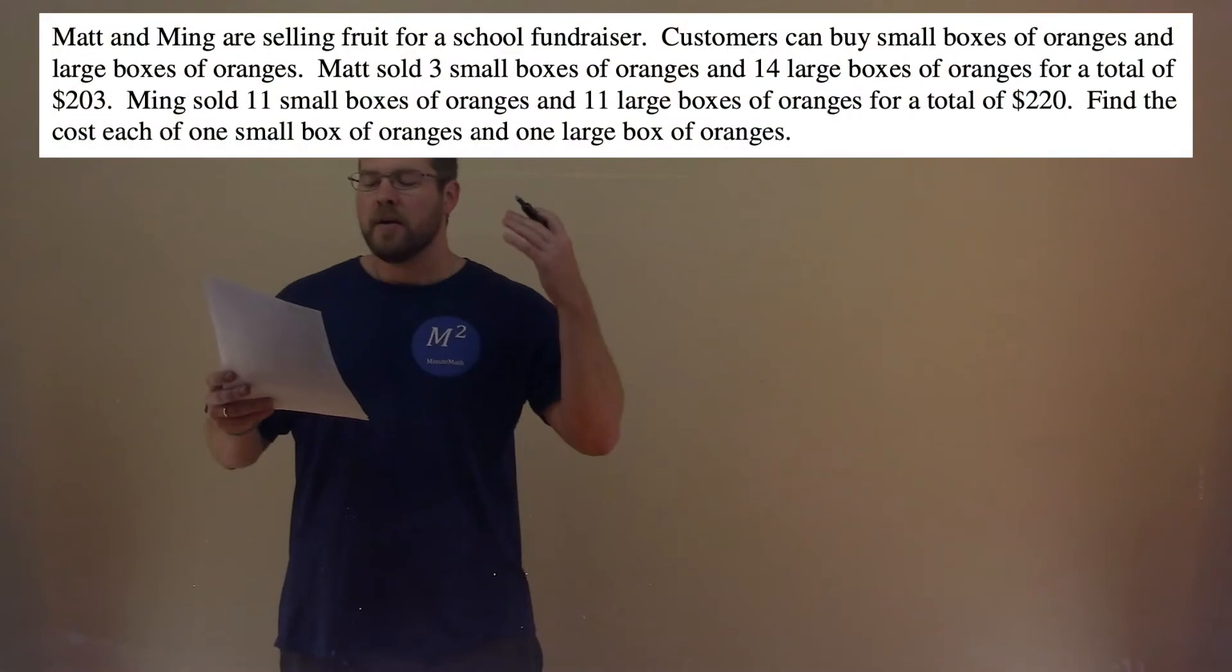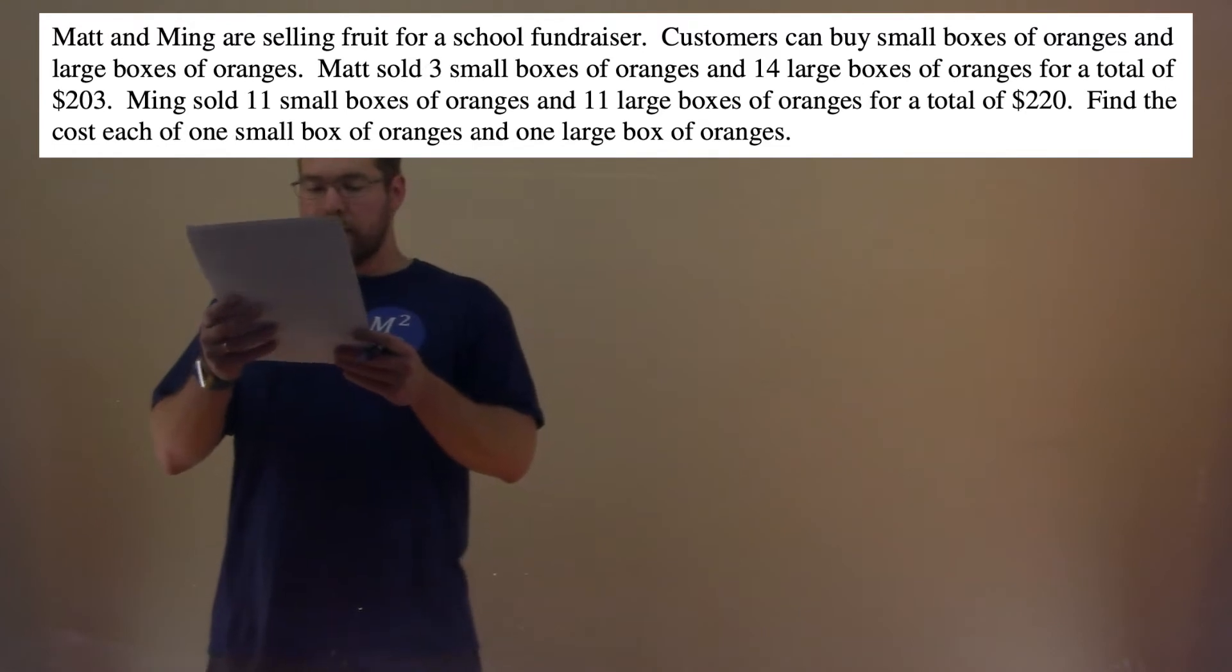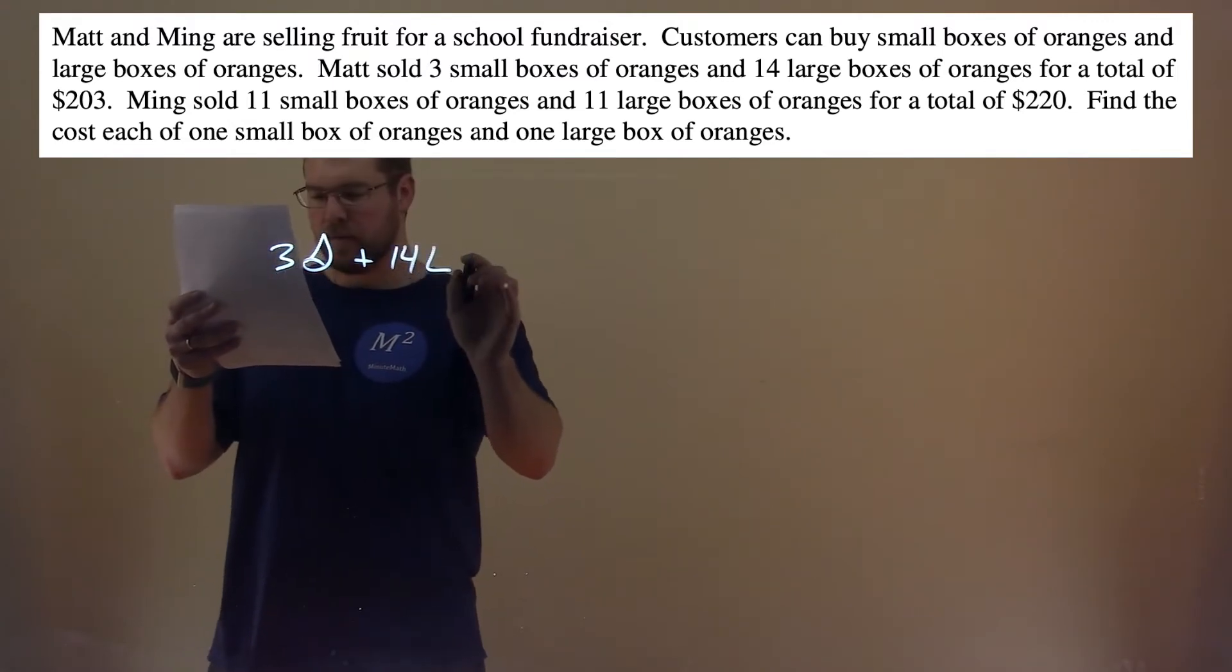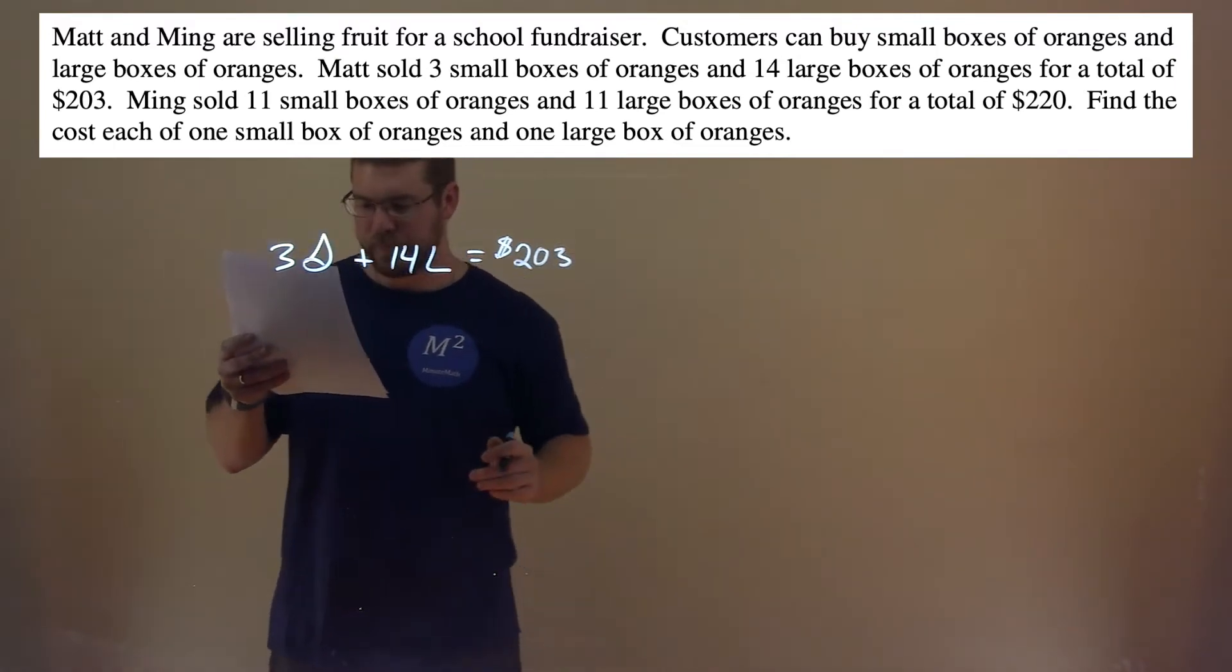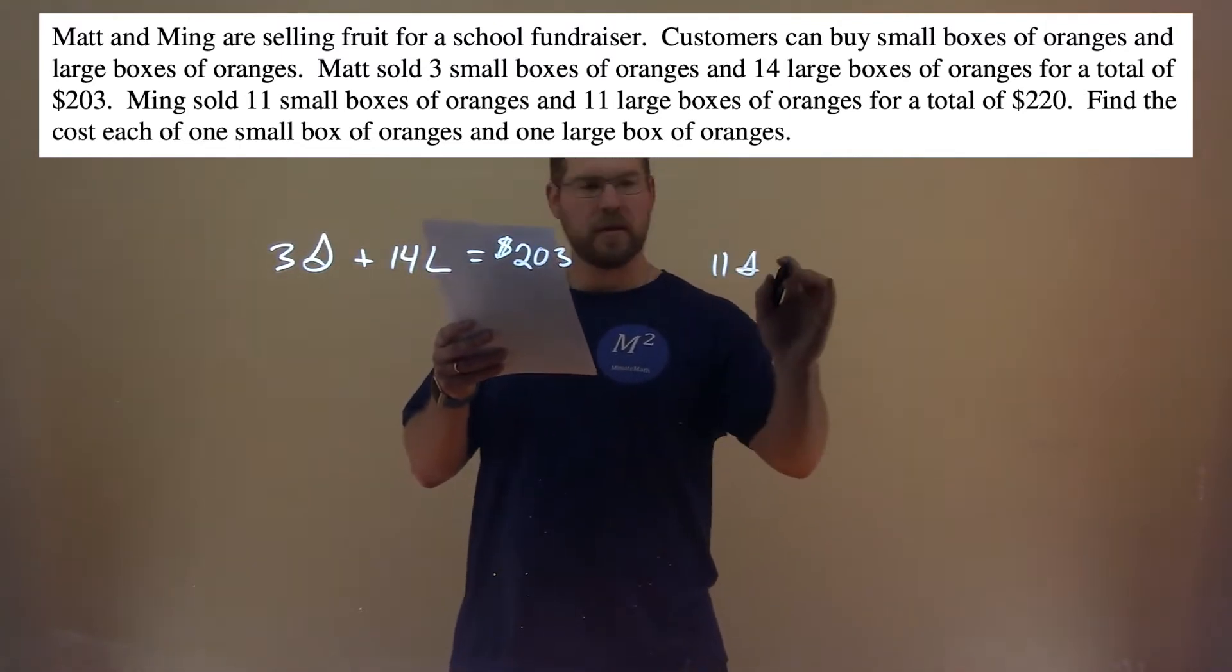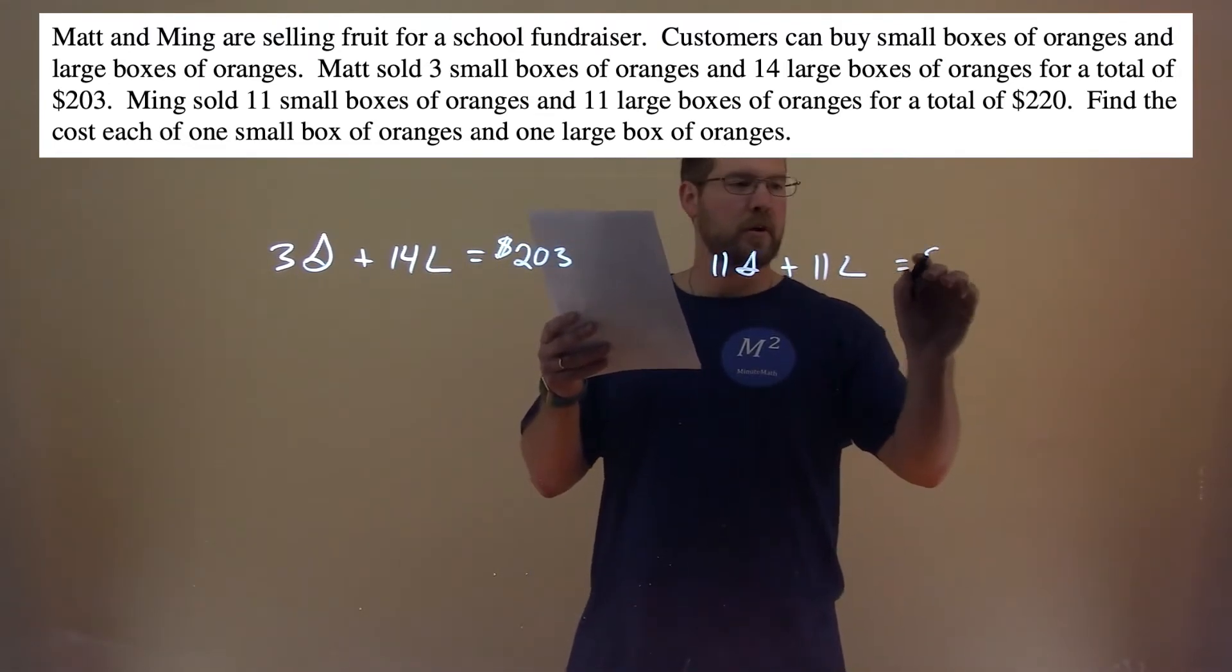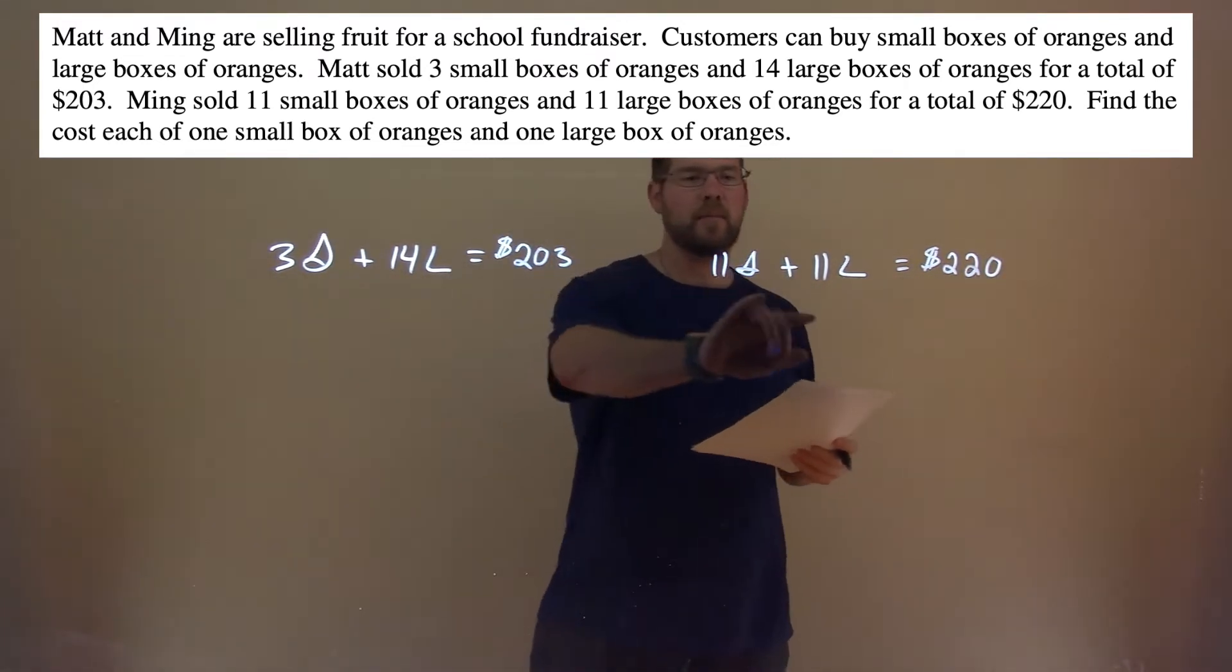Okay, so S will be small boxes of oranges, L will be large boxes of oranges. Matt sold 3 small boxes of oranges and 14 large boxes of oranges for a total of $203. Ming sold 11 small boxes of oranges plus 11 large boxes of oranges for a total of $220. So we have our two equations, Matt's and Ming's.